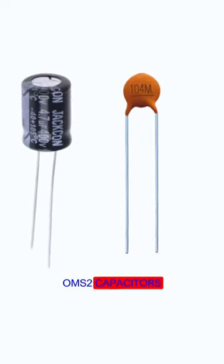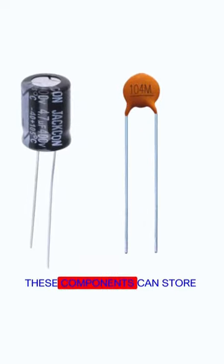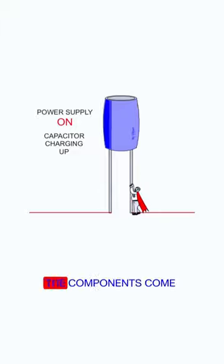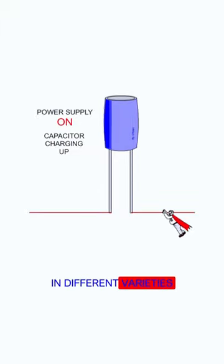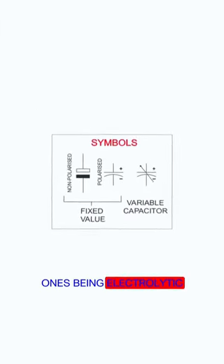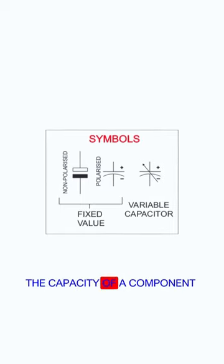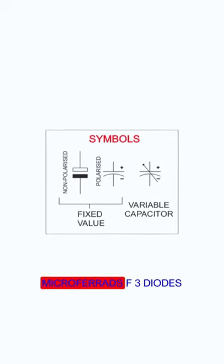2. Capacitors. These components can store electric charge temporarily. They come in different varieties, with the most common ones being electrolytic and ceramic discs. The capacity of a component is usually measured in microfarads.